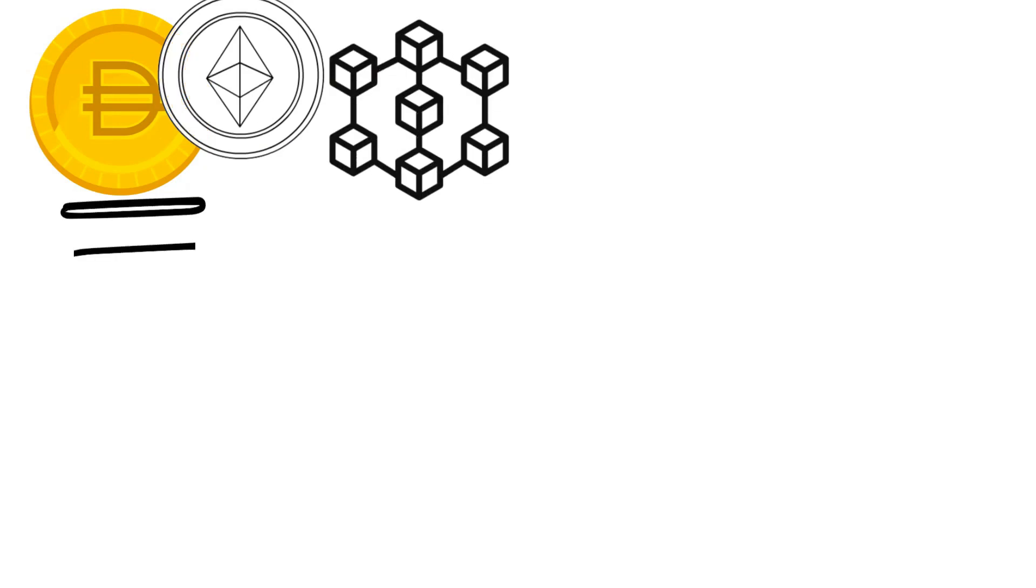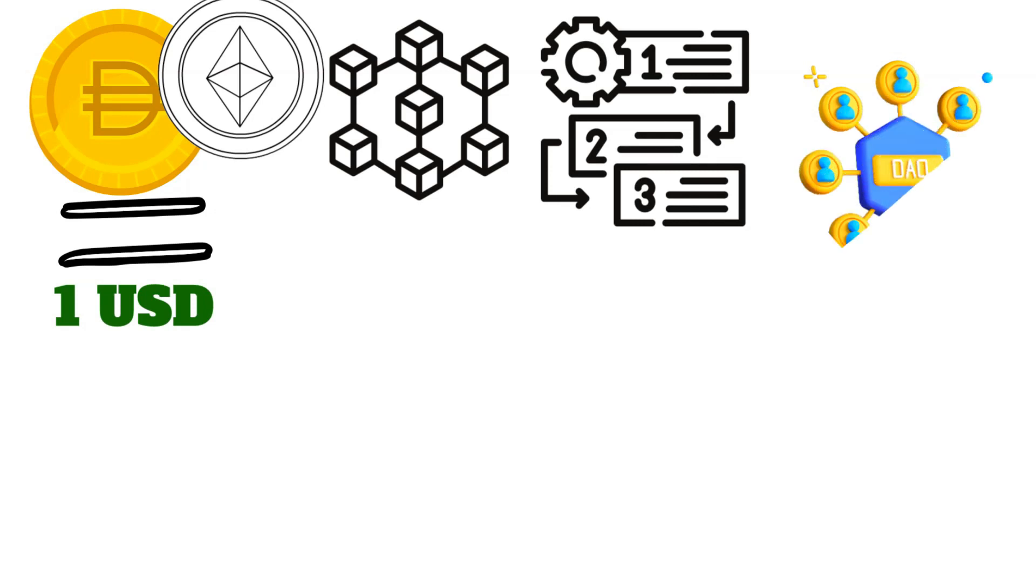DAI is a stablecoin on the Ethereum blockchain that aims to maintain a value close to 1 US dollar through smart contracts and decentralized governance, more specifically the MakerDAO, which is a decentralized autonomous organization.